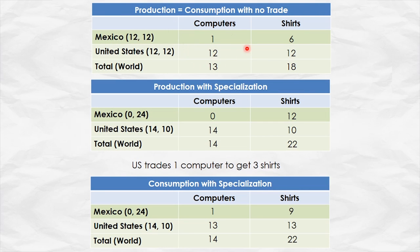Here is consumption with no trade, and here is production with specialization. Now suppose the United States trades one computer to get three shirts. There are other possible trades which make both countries better off, but this is a nice simple one. The United States produced 14 computers and trades one to Mexico, leaving the US with 13 and Mexico with one. In return, Mexico sends three shirts, so the United States goes from 10 shirts to 13. Those three shirts come from Mexico, which produced 12 but now consumes only nine.